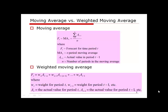Both of them are based on the number of periods in the moving average. But the difference is that moving average is a simple mathematical average, while weighted moving average assigns different data points with different weights. Moving average is basically a special type of weighted moving average where each number has exactly the same weight.